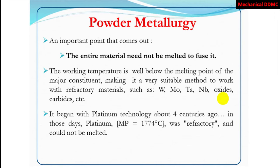The working temperature is well below the melting point of the metal, making this a very suitable method to work with refractory materials such as W (tungsten), Mo, Ta, Nb, oxides, and carbides. If we are able to shape our metal below its melting point, then there are a lot of advantages you can get from it — especially with refractory metals and materials.